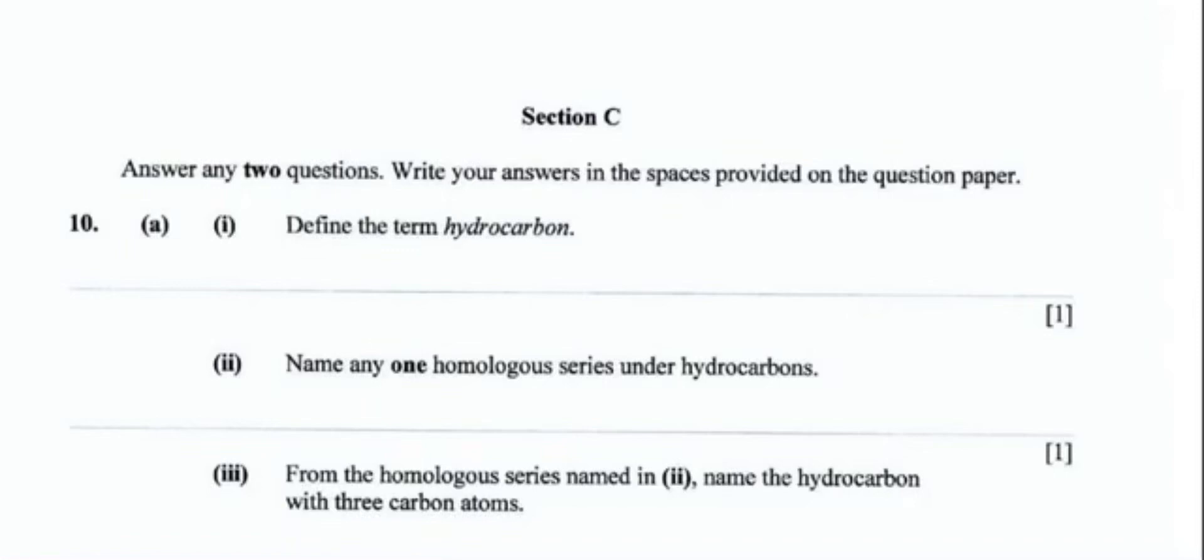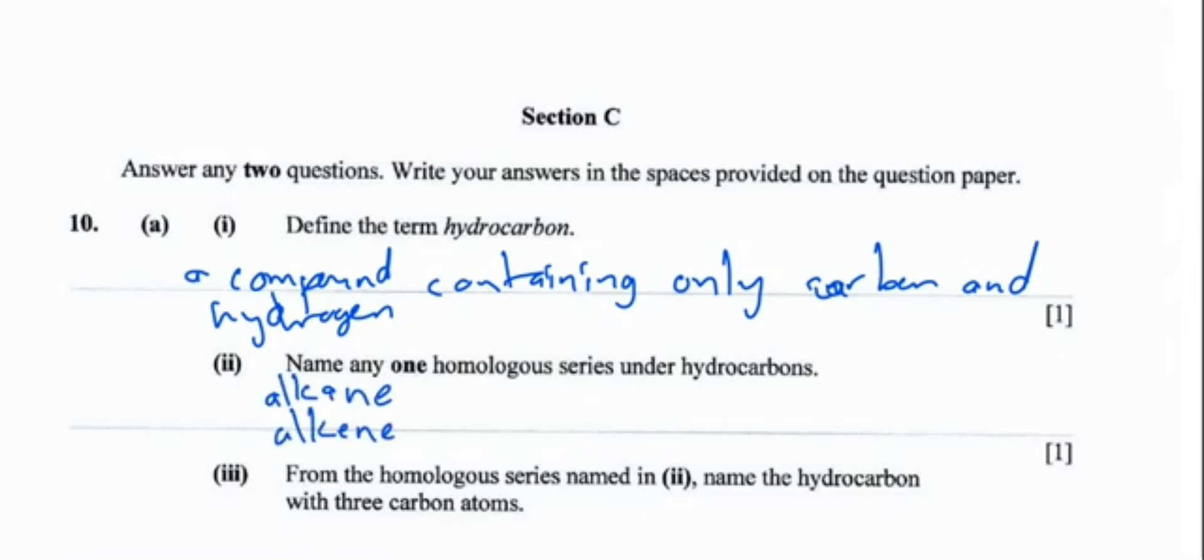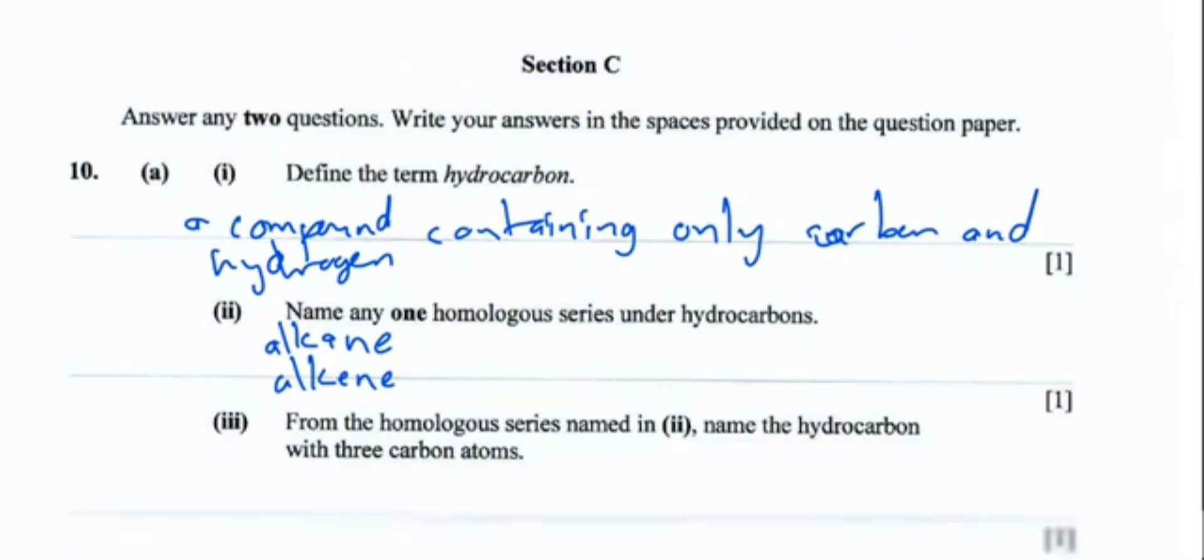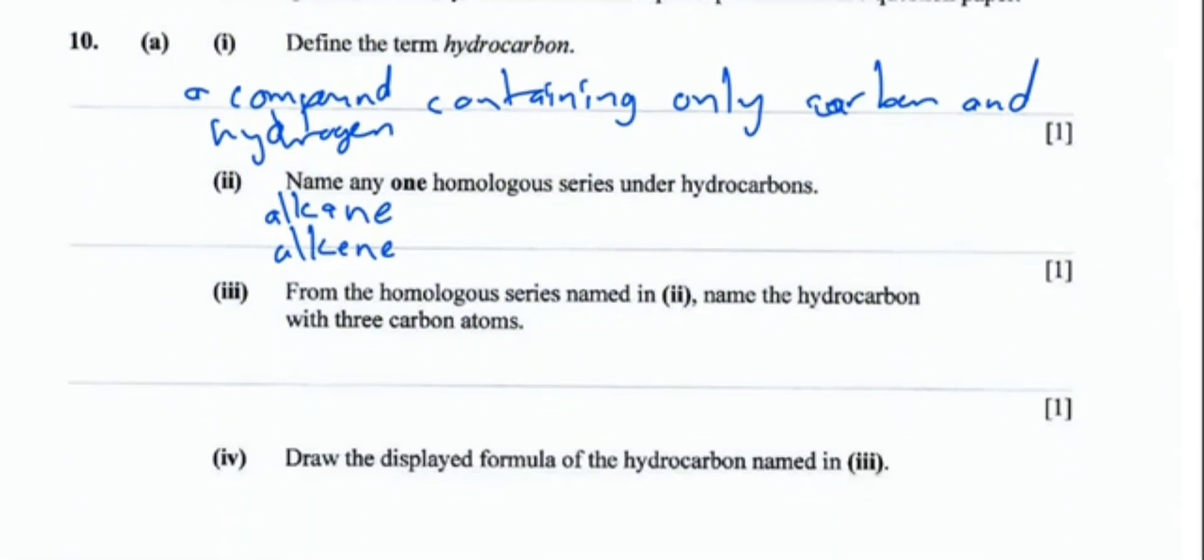We continue with section C of our paper 2. We are on question 10 now. Define the term hydrocarbon. A hydrocarbon is a compound which contains only carbon and hydrogen. The next part says name any one homologous series under hydrocarbons. We have many. You can name alkanes or you can name alkenes, depends which ones you're comfortable with.